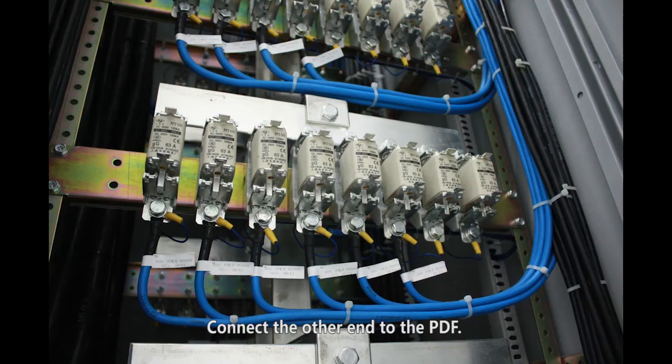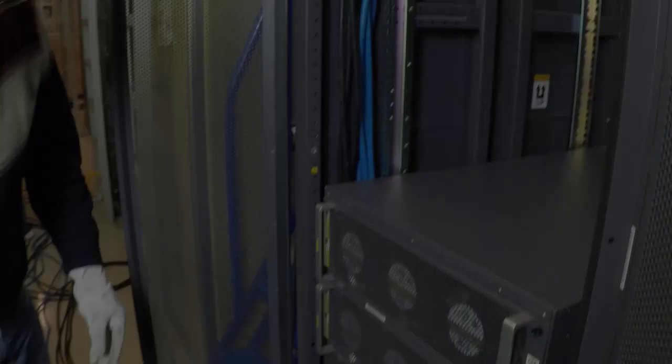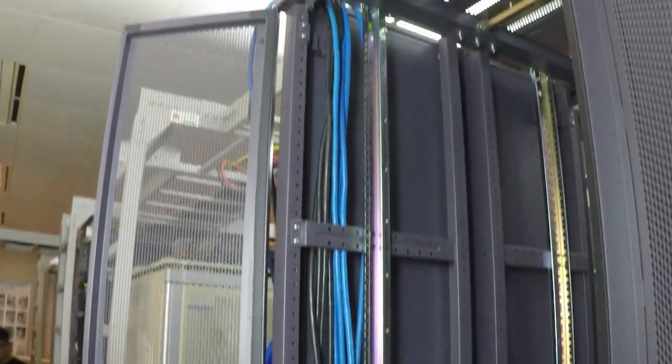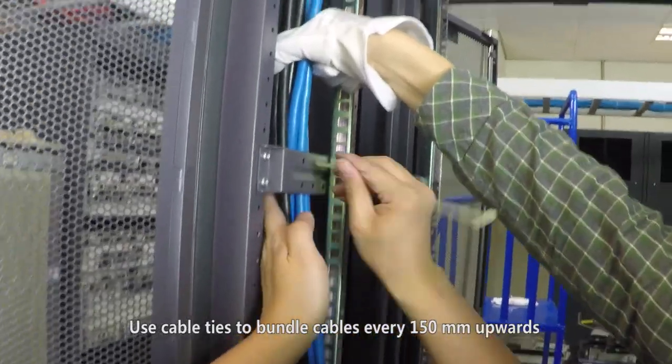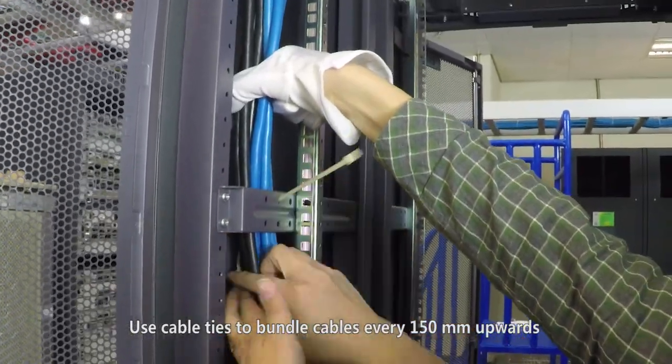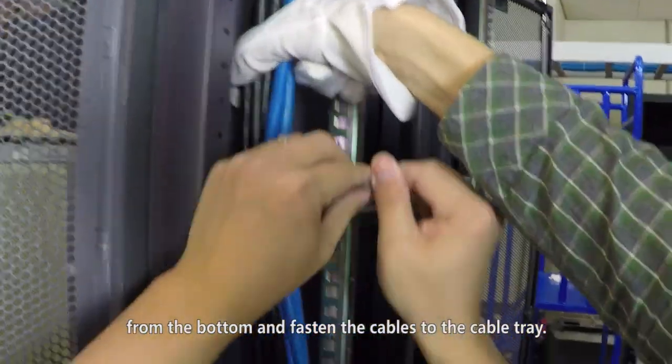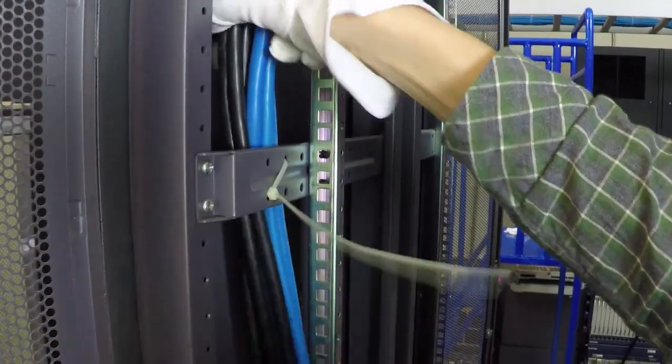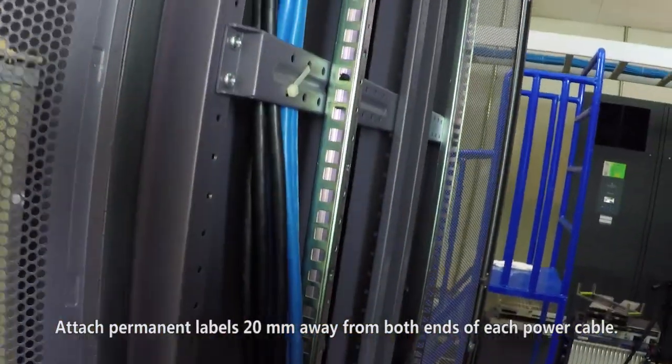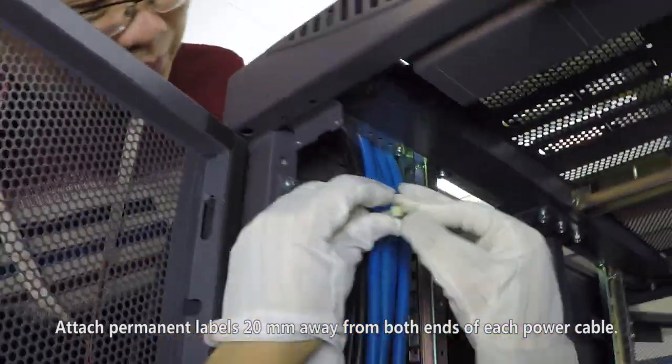Connect the other end to the PDF. Use cable ties to bundle cables every 150mm upwards from the bottom and fasten the cables to the cable tray. Attach permanent labels 20mm away from both ends of each power cable.